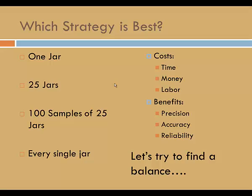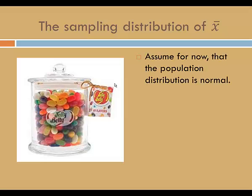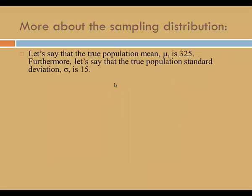Let's see if we can find a balance. Consider the sampling distribution of the sample mean, x bar. Assume for now that the population distribution is normal. If the population distribution is normal, then the sampling distribution will also be normal. The sampling distribution has the same mean as the population distribution. The sampling standard deviation, however, is less than the population standard deviation. The sampling standard deviation, also called the standard error of the mean, is sigma over the square root of n, where n is your sample size. Let's say that for 14.5 ounce jars of jelly beans, the true population mean mu is 325, and the true population standard deviation sigma is 15.